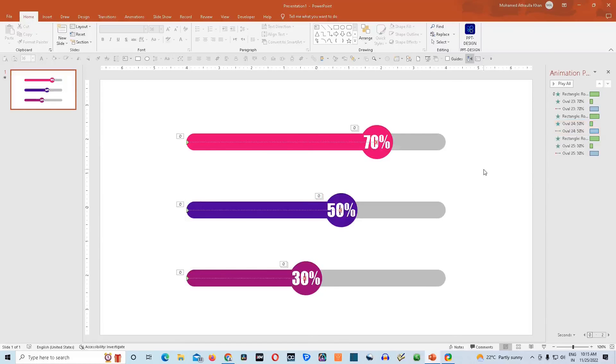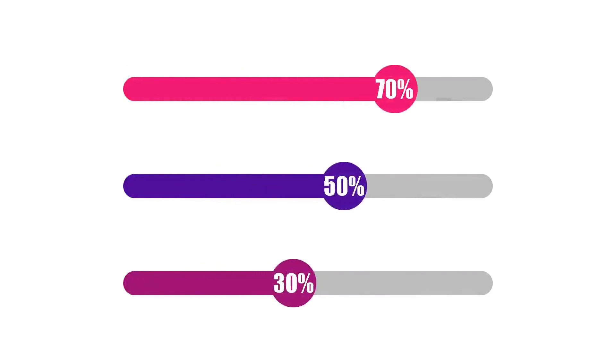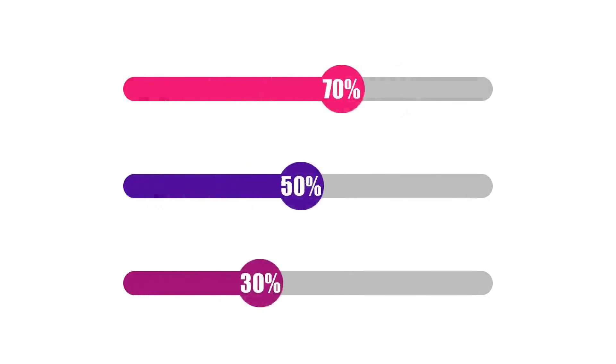The animation is complete. If we go to slideshow, we will see a very beautiful graph slider animation in PowerPoint. Let's go to slideshow and see how it's looking — it's looking extremely beautiful. You click on the left arrow key and it will disappear, and you click on the right arrow key and it will appear again. So this is how you create a graph slider animation in PowerPoint.